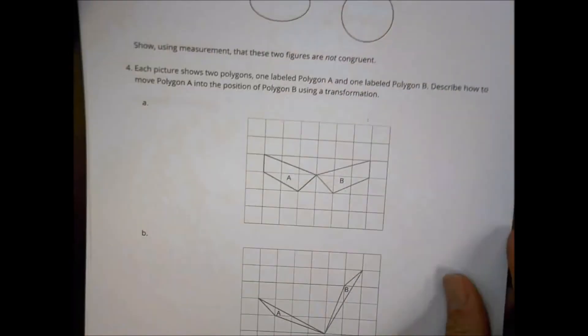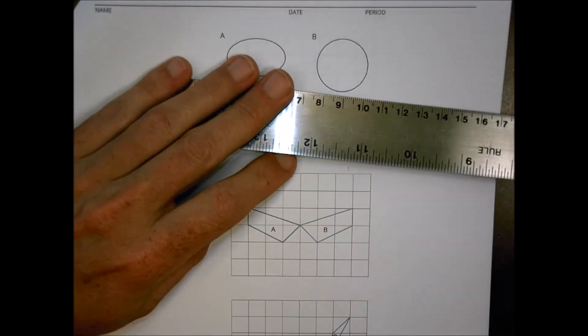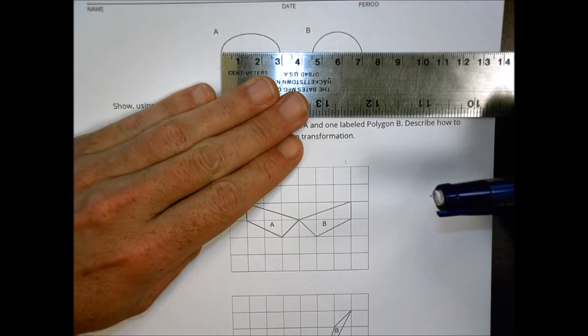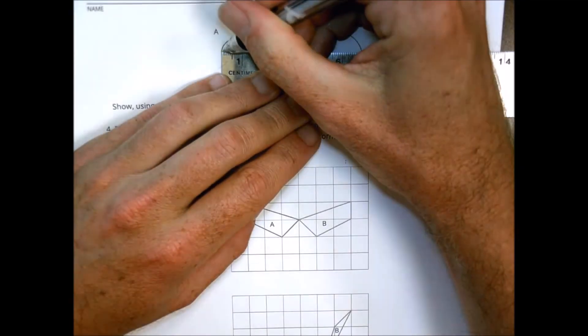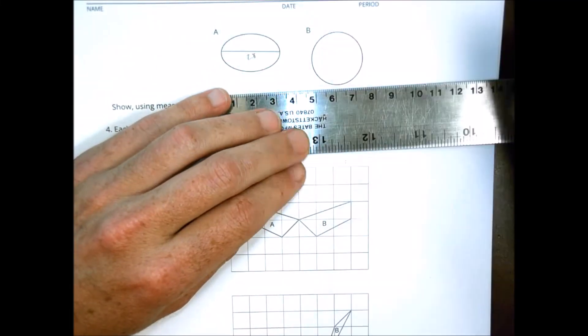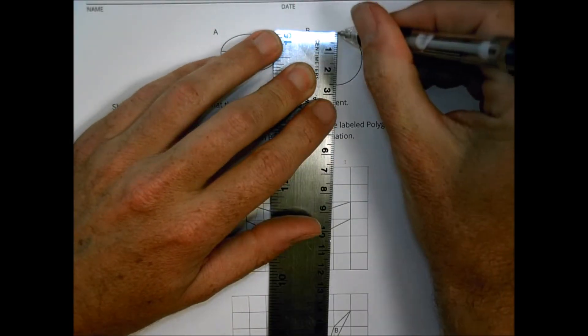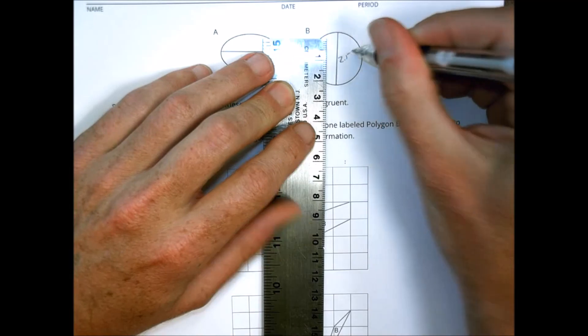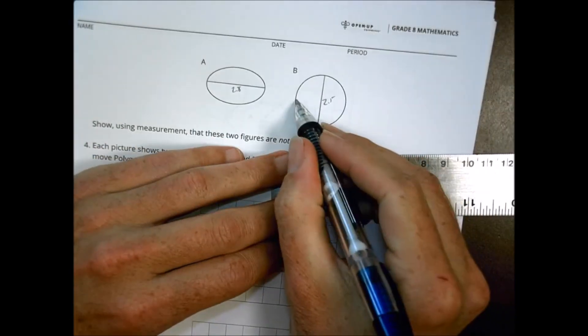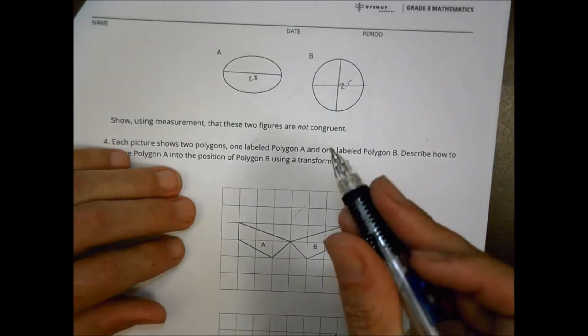It wants to know here are two figures, show of measurements that these are not congruent. So what you might do is you might take a look at the length of this one here across the longest point. And you could say, well, from there to there, I'm going to be 2.8 centimeters wide. But here to here, I can see that I am 2.5. And if I want to go across the middle, I'm also going to be 2.5. So I have a 2.5. So I can prove with the lengths here that these are not congruent.